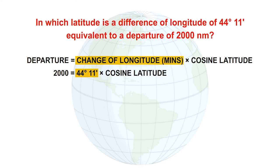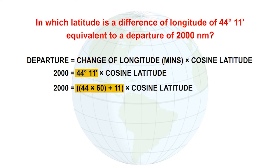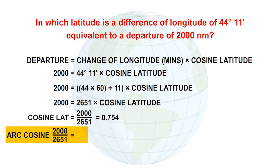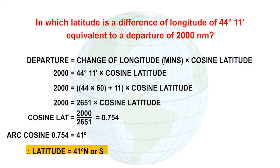You know the departure and the change in longitude. Write them in. We now need to convert 44 degrees and 11 minutes into minutes. It comes to 2651 minutes. Now rearrange the equation to make the cosine of the latitude the subject. Use the arc cosine function on your calculator to solve for the cosine, which gives us a latitude of 41 degrees. So the latitude is 41 degrees. Remember it could be north or south. Convergency and departure are symmetrical either side of the equator.